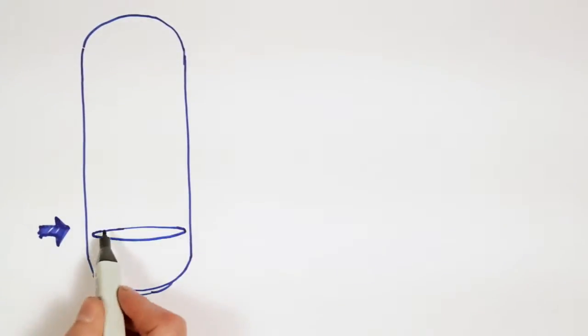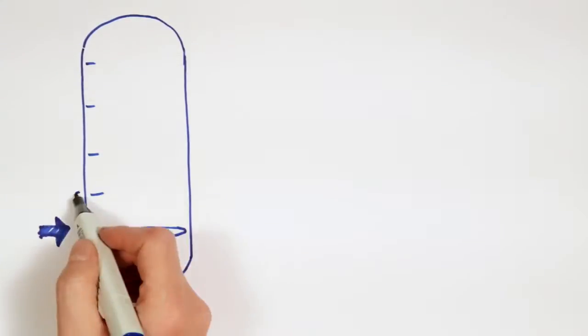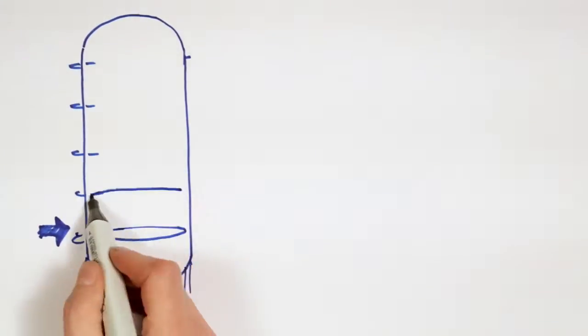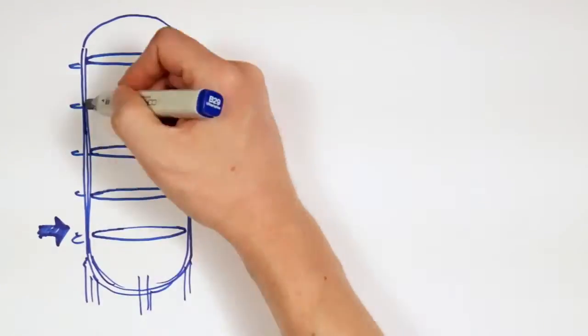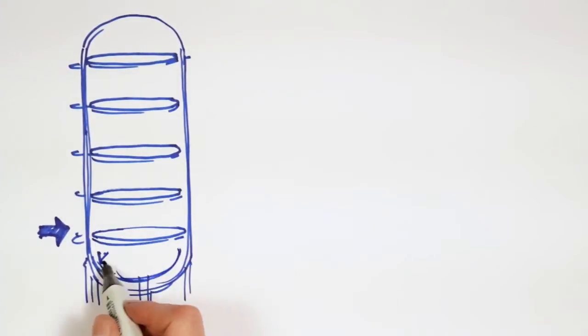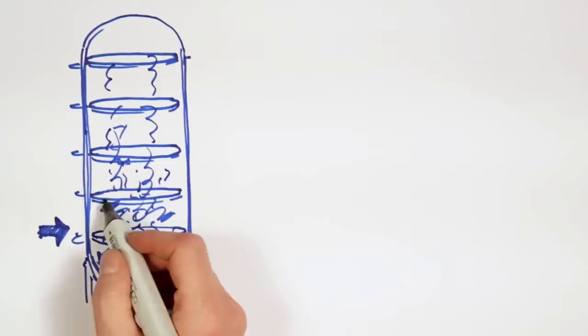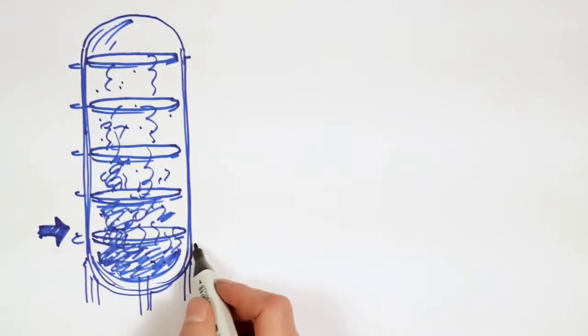The first stop in the refining process is called the distillation column. This is where we heat the crude oil to very high temperatures. This process separates the oil into different parts, or fractions as they're called, according to their boiling points.